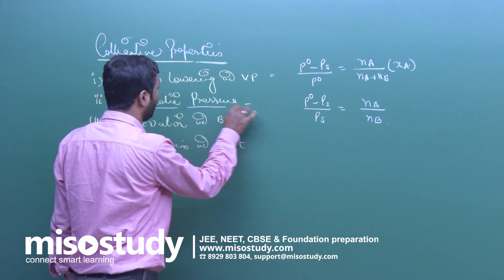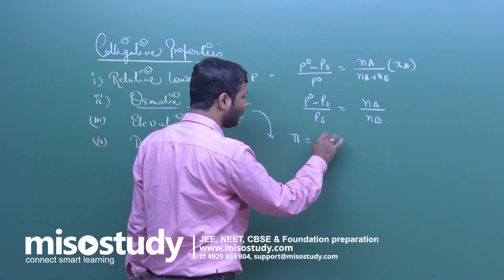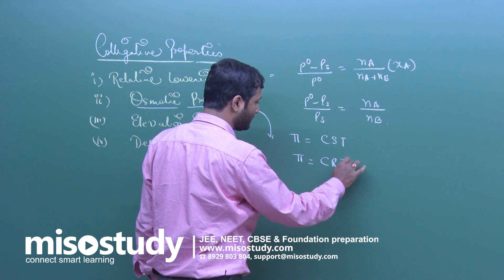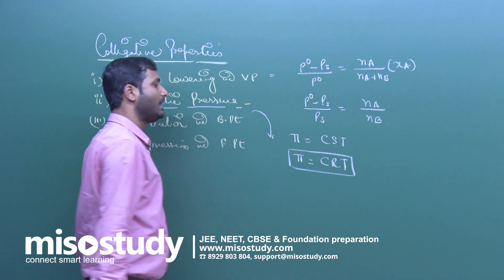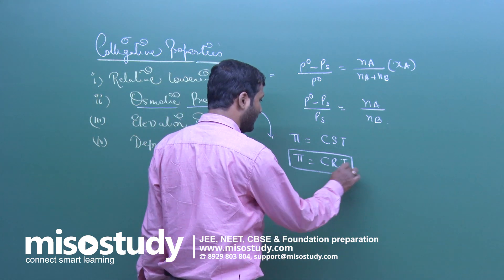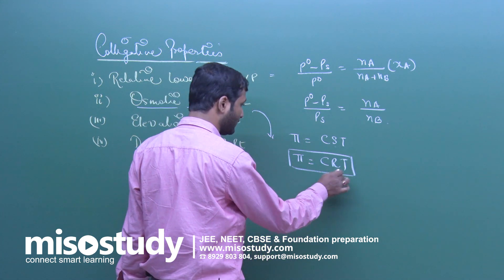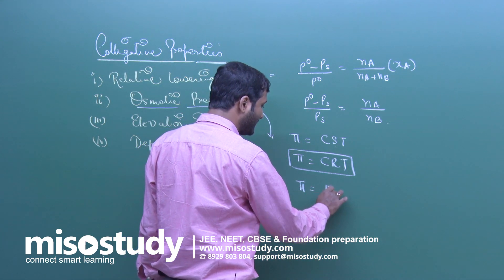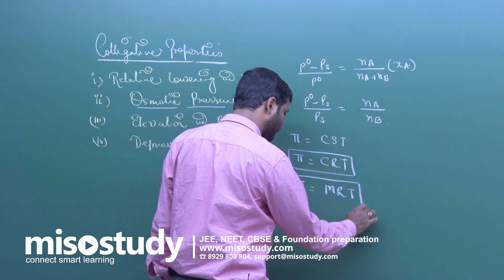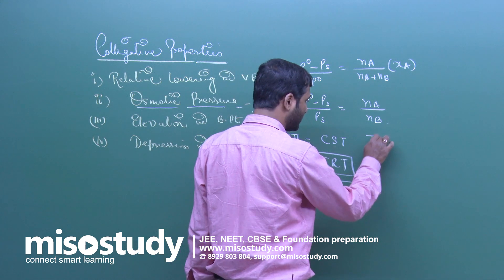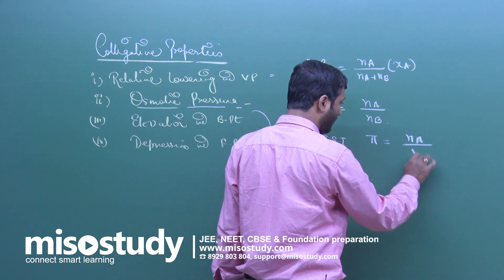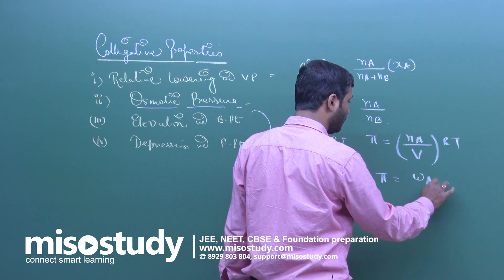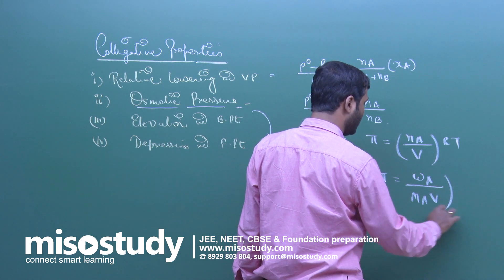Next, osmotic pressure. The symbol is pi. Pi = CsT; in the book this is the solvation constant, which can be replaced by R, so we write pi = CRT, where C is the concentration, T is the temperature, and R is the gas constant (0.0821 or 8.314). So pi = MRT, where concentration is molarity. It can also be written as pi = (N_A / V) × RT, or pi = (W_A / M_A) × (1/V) × RT.